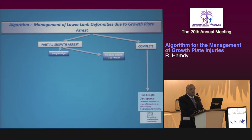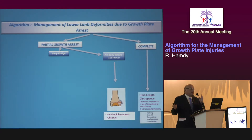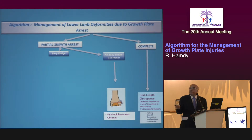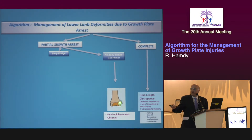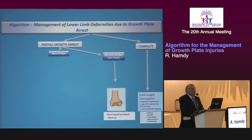If it is a partial growth arrest, the next question is: is there a bony bridge? If there is no bony bridge, this means there is only a sick physis continuing to grow at a different rate. In that case, the treatment should be hemi-epiphysiodesis to correct the deformity, and then observe — that may be all that is needed.